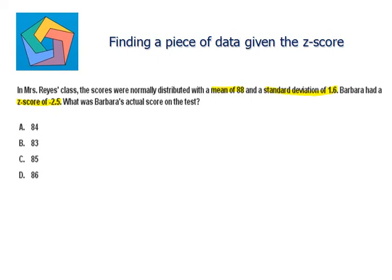So, we have x equals z-score is negative 2.5 times standard deviation is 1.6 plus mean is 88. 2.5 times 1.6 is 4.